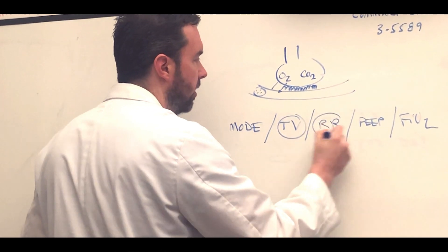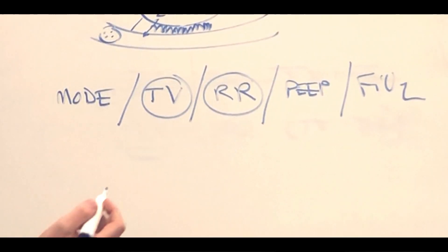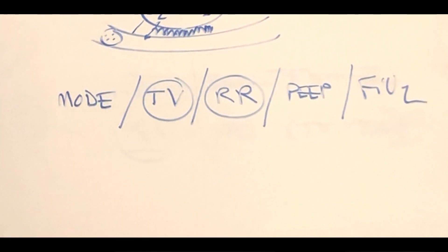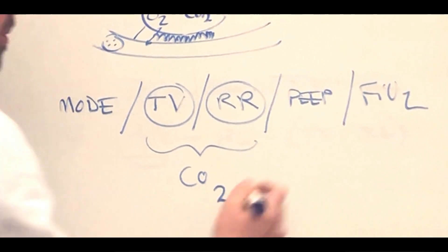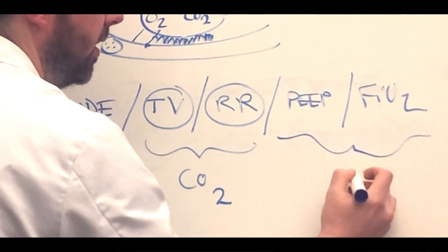Tidal volume and respiratory rate, as you would imagine, are the elements of minute ventilation. So these are the things that are going to affect CO2. PEEP and FiO2 are the things that are going to affect O2.